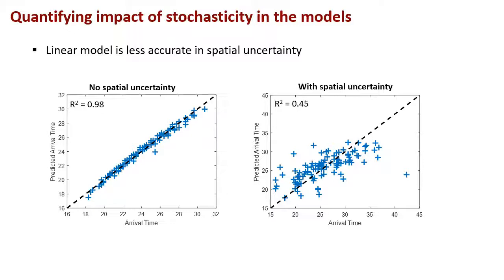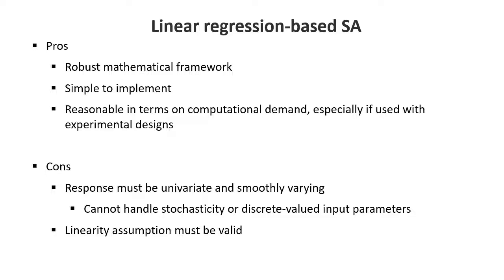In summary, linear regression is very well known and easy to do. It can be used in conjunction with experimental design, but it is only valid if our responses are smoothly varying — the linearity assumption must hold and the linear fit must indeed be a good fit. It also cannot handle stochasticity or discrete-valued input parameters.